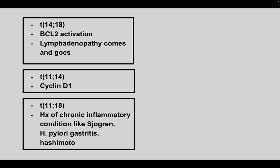Next is translocation 14;18, BCL2 activation, and lymphadenopathy that comes and goes. This is follicular lymphoma. BCL2 is an anti-apoptotic protein.